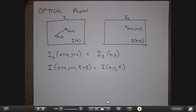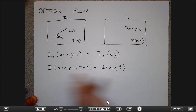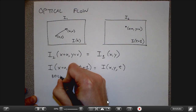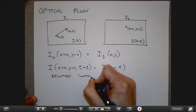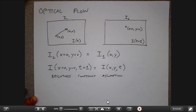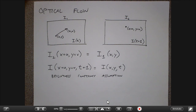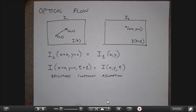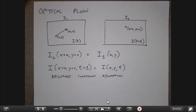We're estimating the vector (u, v) at every pixel. The key assumption in optical flow is called the brightness constancy assumption: if I move the camera or things move in the scene, the colors on the surface of an object cannot change. In the real world that's not always true, and we'll talk about relaxations shortly. This ties in with the Lambertian assumption — that things don't fundamentally change color depending on what direction you look at them from.